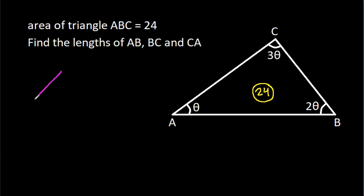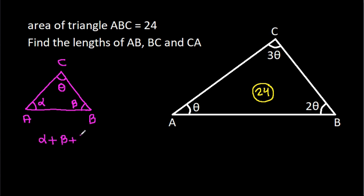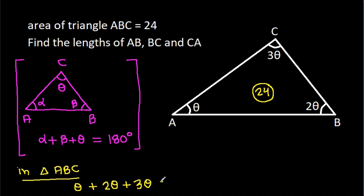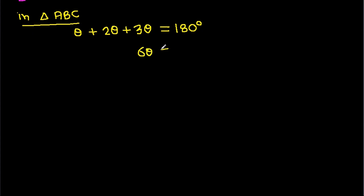So, in any triangle ABC, if the angles are alpha, beta, and theta, then the sum of all angles — alpha plus beta plus theta — equals 180 degrees. So here, in triangle ABC, theta plus 2 theta plus 3 theta equals 180 degrees, and 6 theta equals 180 degrees.